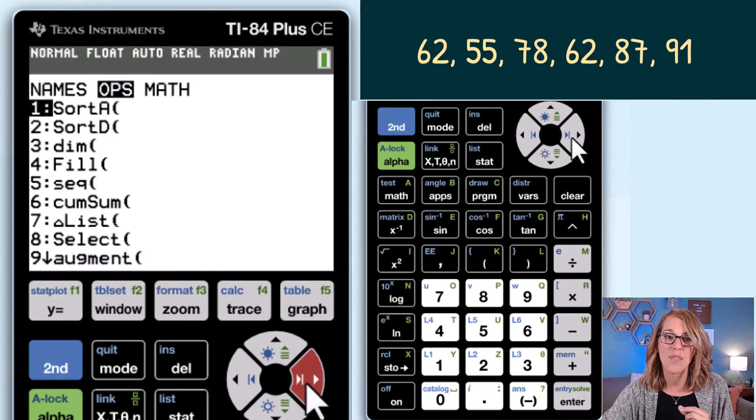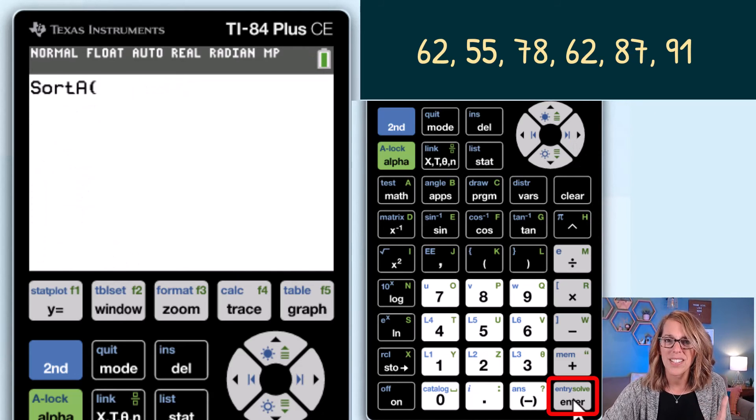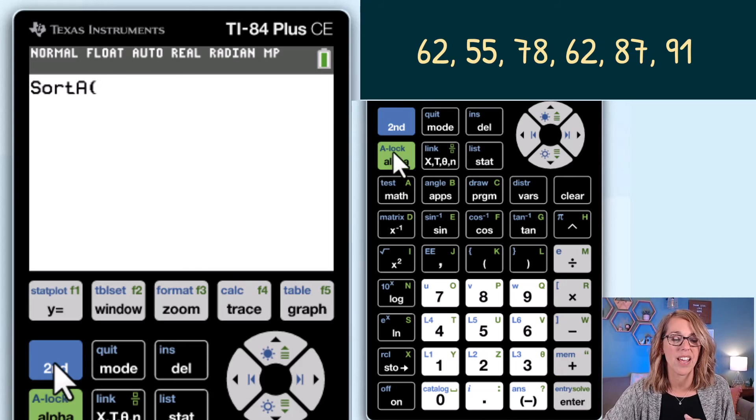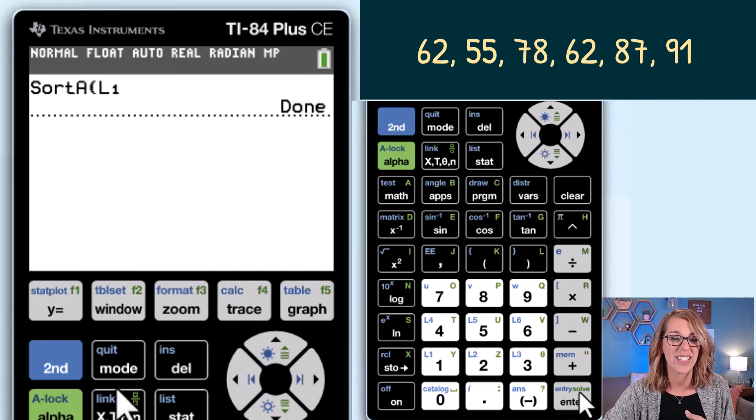I want to arrow over to choose operations and then I do want sort A for sort ascending so I'm going to click on enter. It wants to know what list I'm going to sort and I want list one so second one for list one and then enter. It just says done.